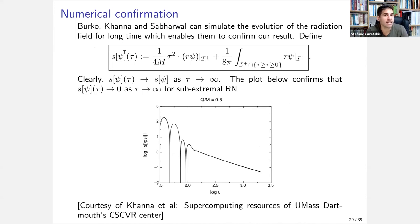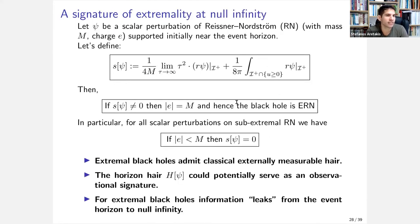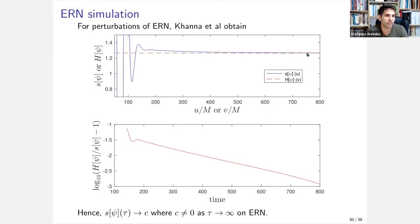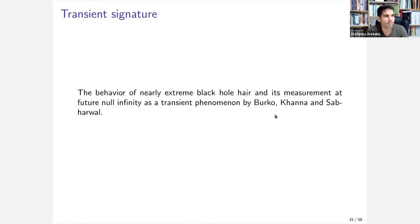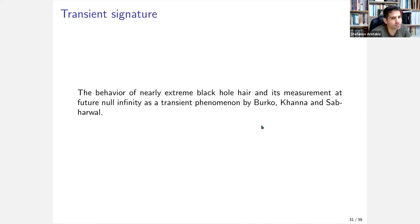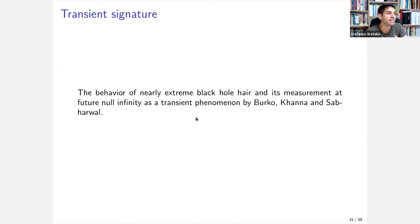Burko, Khanna, and Sabharwal have provided numerical simulations confirming this: the relevant quantity goes to zero in the sub-extremal case but does not go to zero in the extremal case. Moreover, they have been able to study the near-extremal black hole regime and quantitatively derive conclusions about the passage from sub-extremality to near-extremality to exact extremality, characterizing the transient phenomenon of observational signatures for near-extremal black holes.